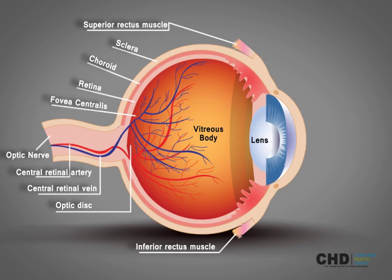The inferior rectus muscle is located in the orbit. It is one of six muscles that control the movements of the eye.